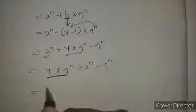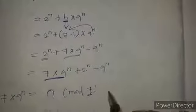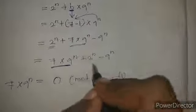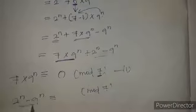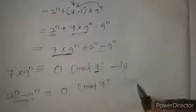We get 7·9^n plus 2^n minus 9^n. Applying congruence mod 7, the term 7·9^n is divisible by 7, so 7 divided gives 0. This is equation number 2.